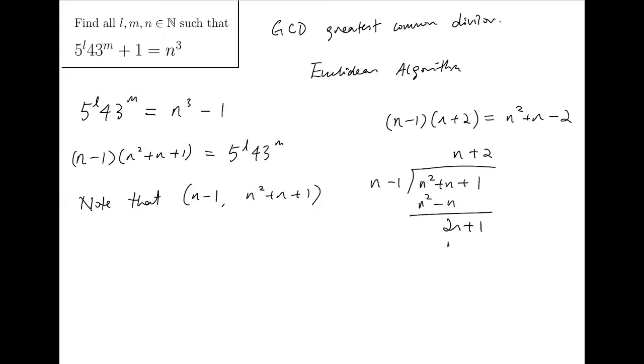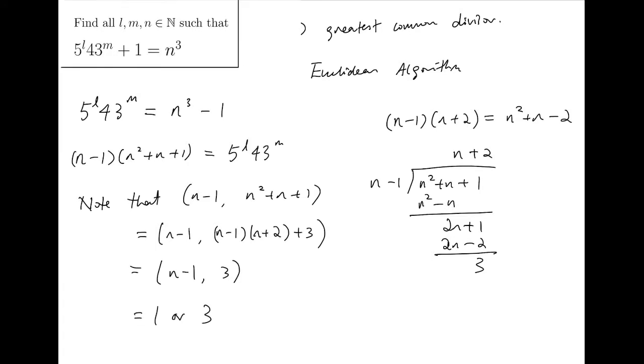And then, divided again, you will get plus 2. So, 2N minus 2, and you will get 3 as the remainder. So, you can rerun GCD in this way. And so, by definition, it becomes the GCD of N minus 1 and 3. So, GCD can only have two possible values here, either 1 or 3.